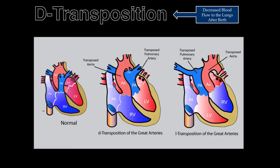In D-transposition, a morphologic right atrium and right ventricle connect to the aorta. With L-transposition, the morphologic left atrium connects to a morphologic right ventricle that connects to a transposed aorta.